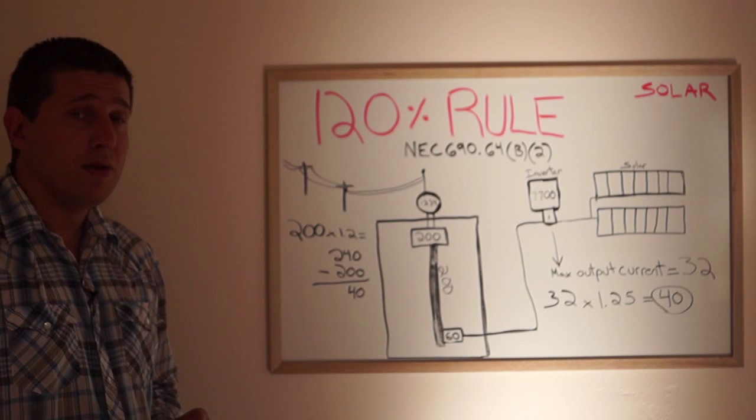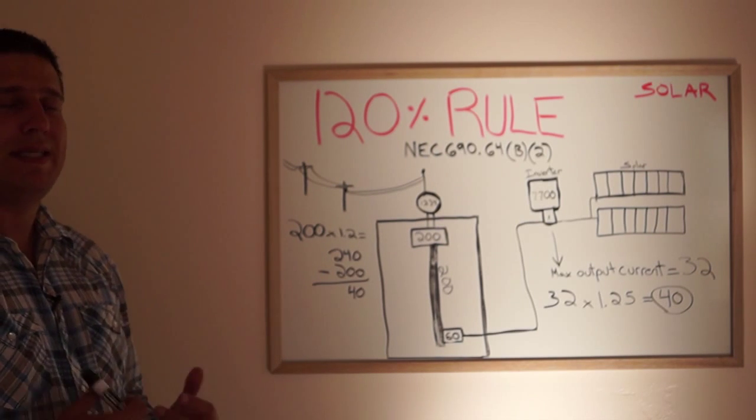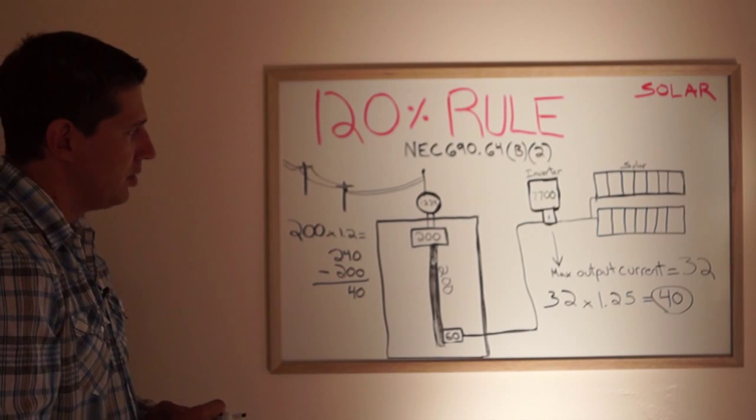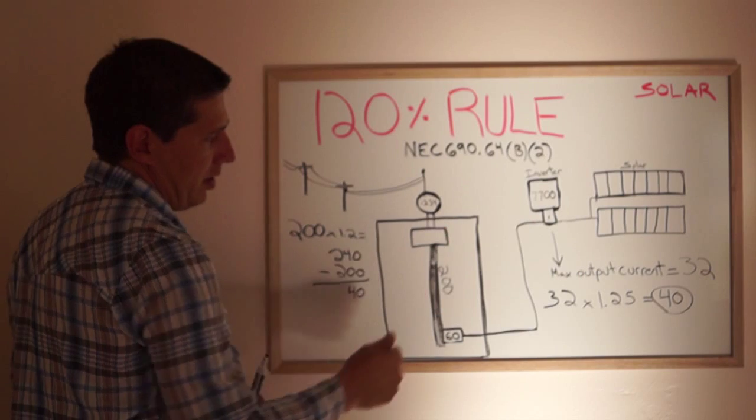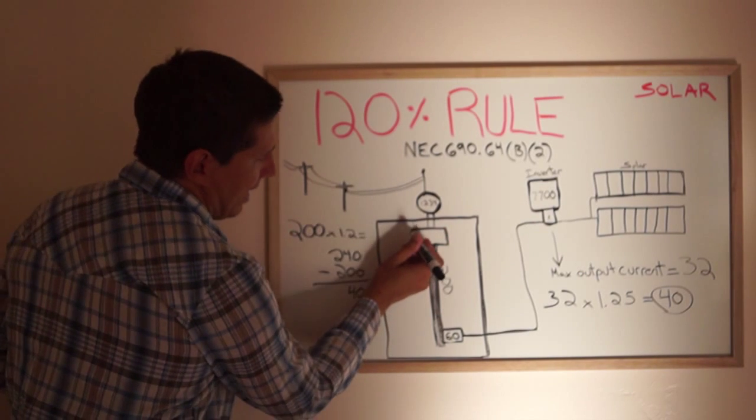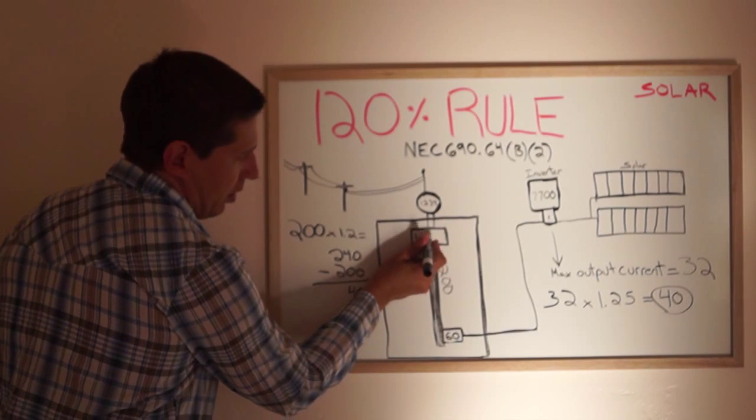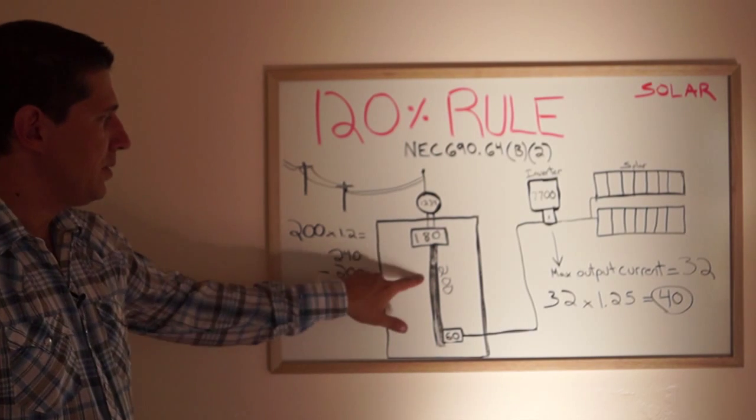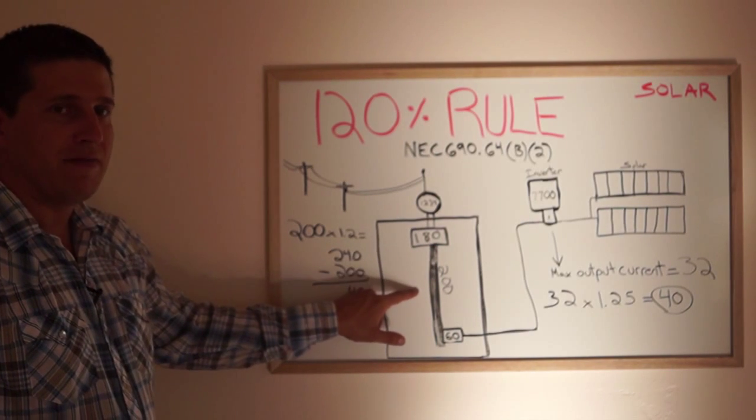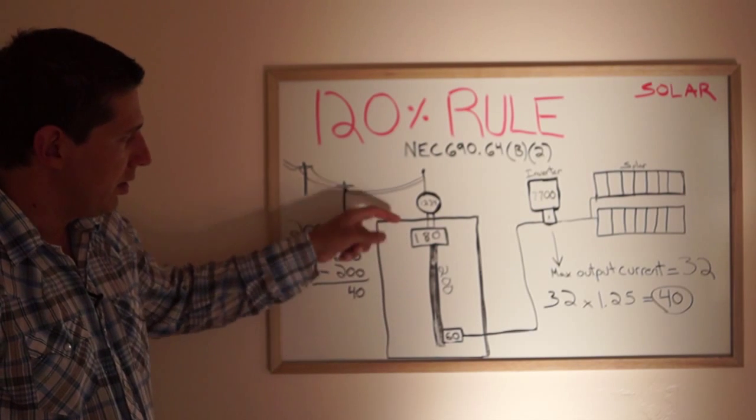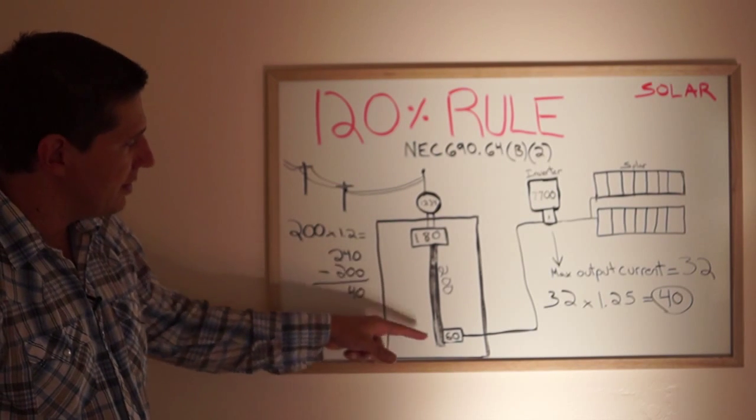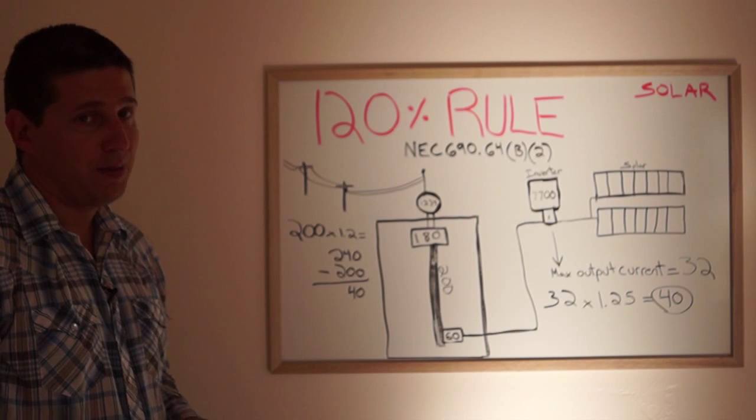So what we can do is we can actually do what's called a derate of the main panel, of the main breaker. So we take that 200 amp out. We look for a 180 amp breaker. And now that bus bar can never have more than 240 amps at one time. 180 amps from the main and 60 amps from the solar equals 240.